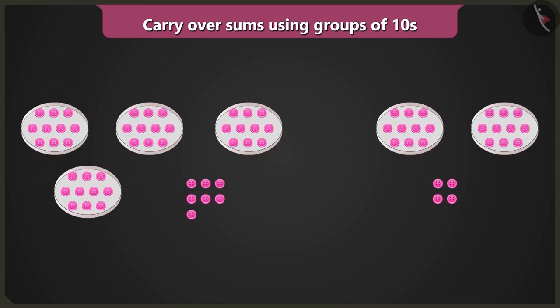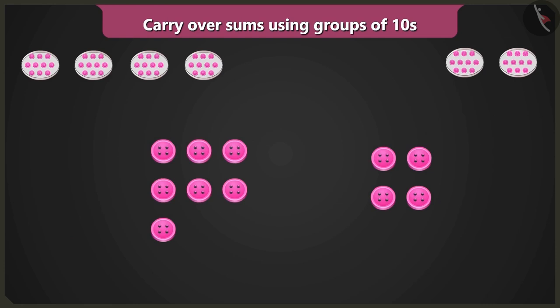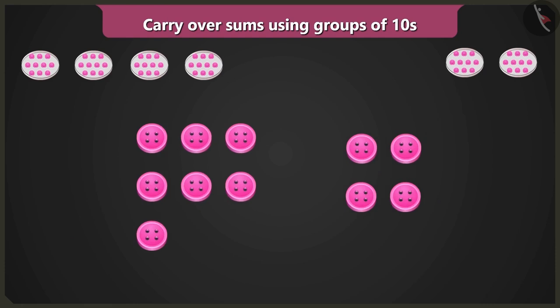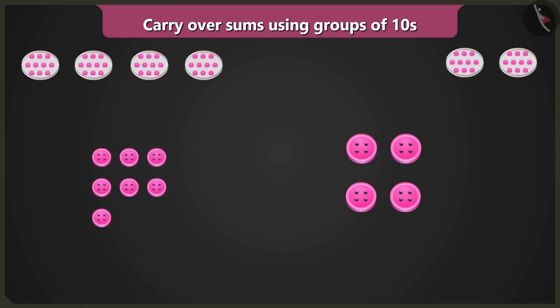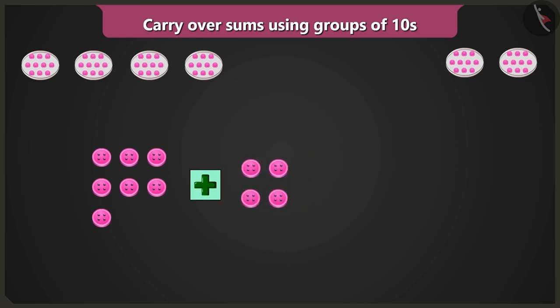To find that out, I will first count the loose buttons. Here we add seven buttons to four loose buttons and get eleven buttons.